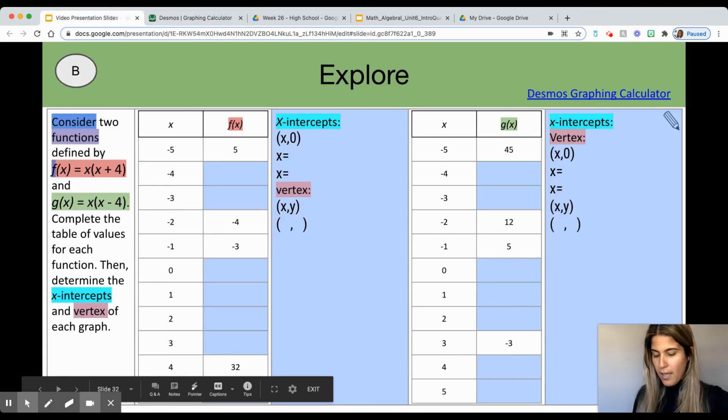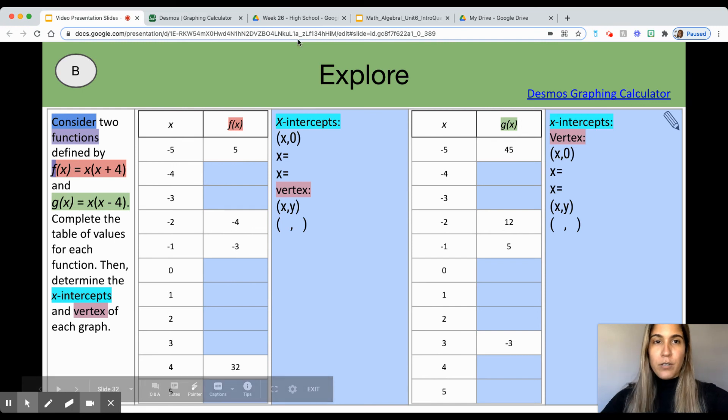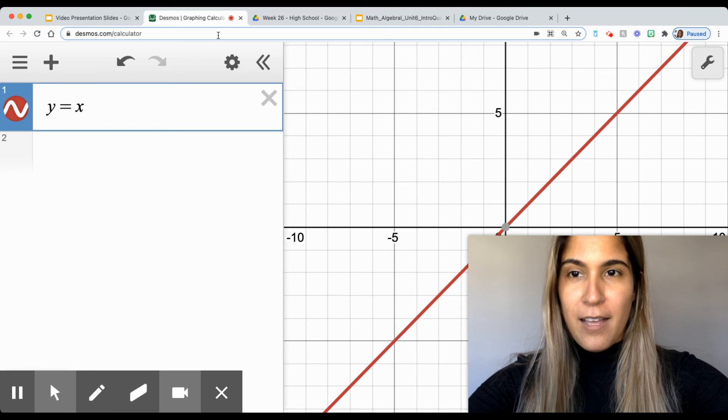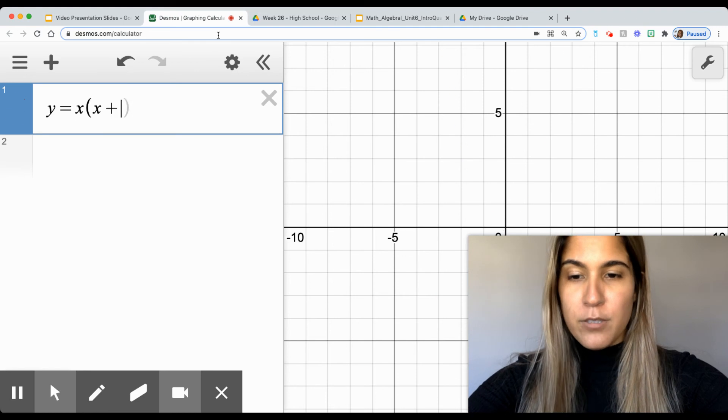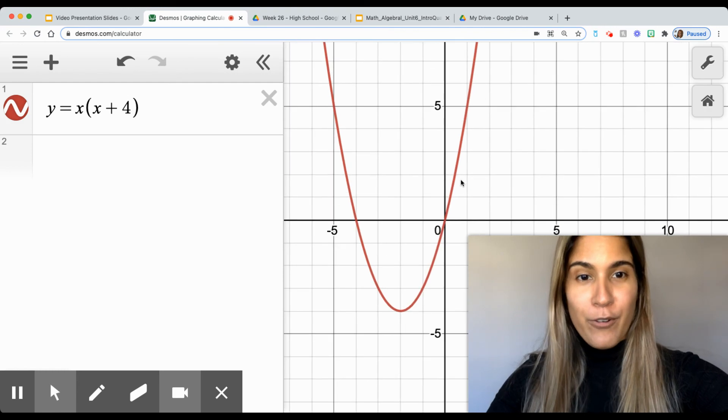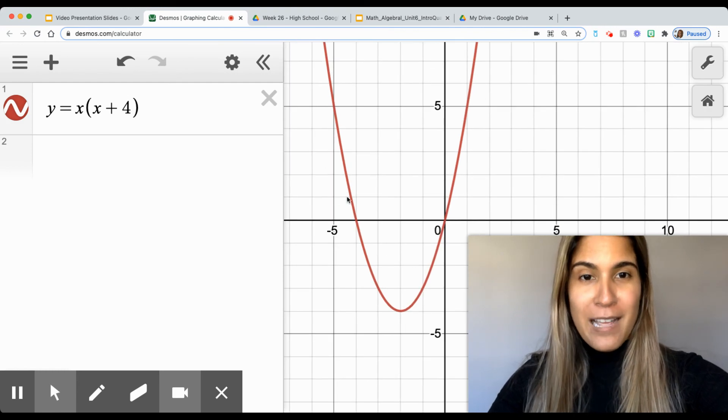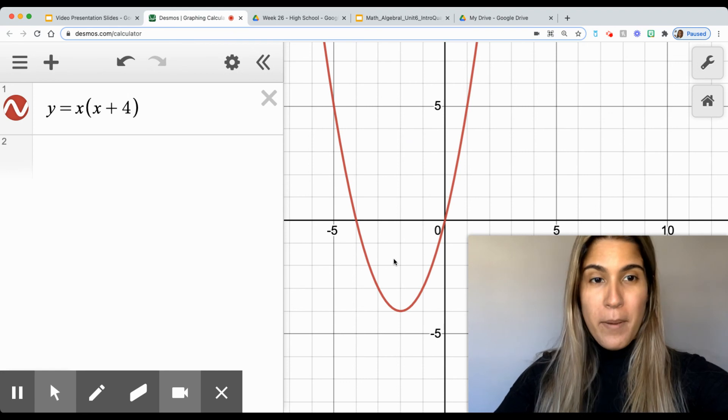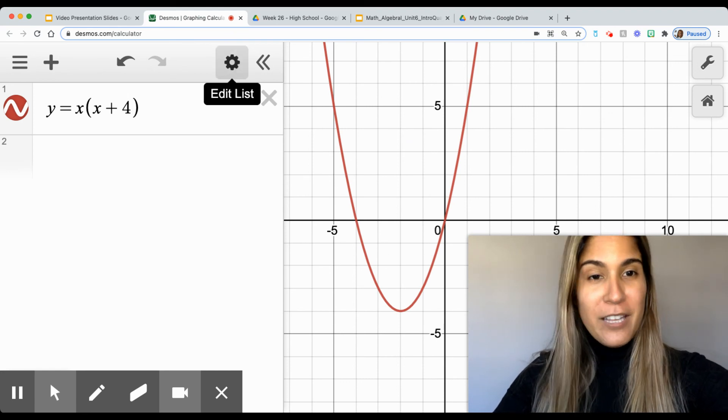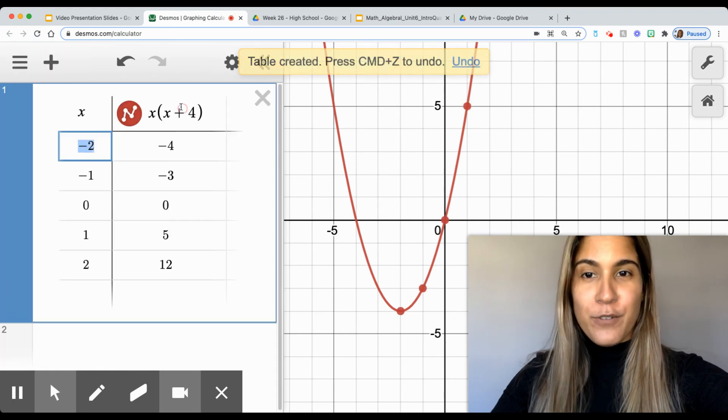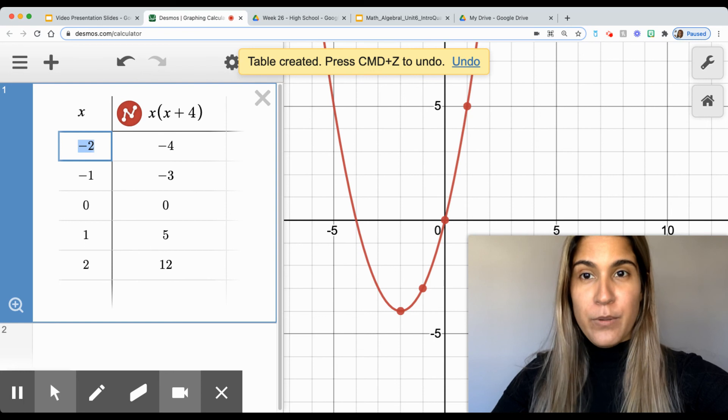Instead of writing f of x, I'm going to write y equals x times x plus 4. I'm going to go ahead and go into Desmos and write y equals x times x plus 4. And I'm able to see my graph right here. Now, we need to fill out a table of values. How can I do this? Remember, you can go to your edit list right here in Desmos and ask it to give you a table. Convert to table. So now you have a table of values that you can use.